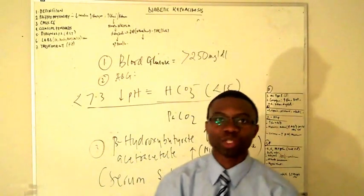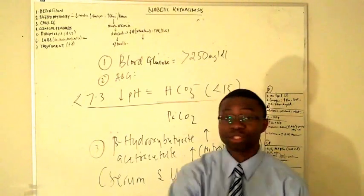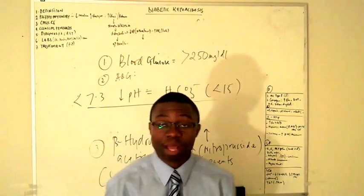If they have an MI, what do you want to order? EKG. You want to have troponin and CKMB. That would give you the diagnosis. It could be an MI.